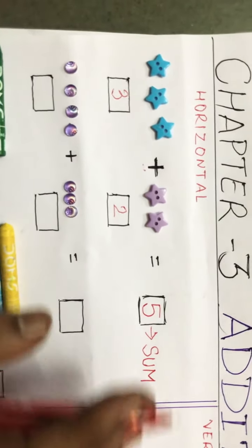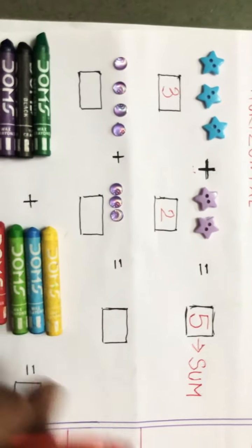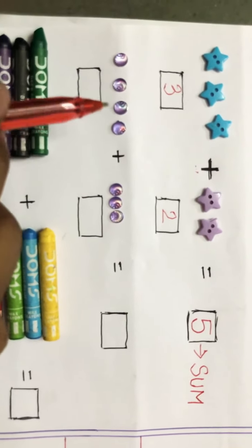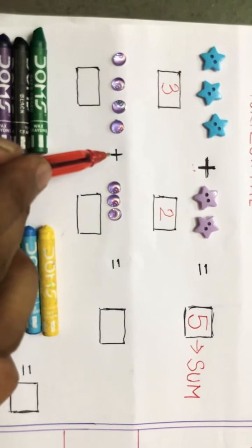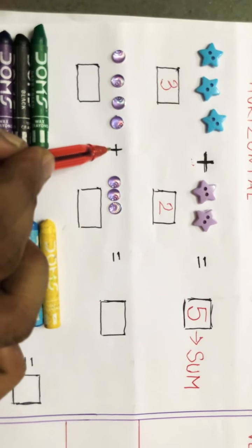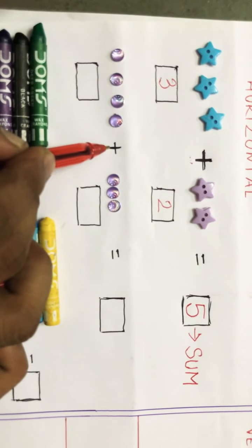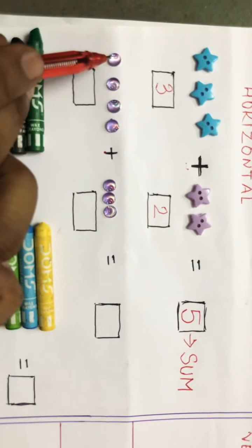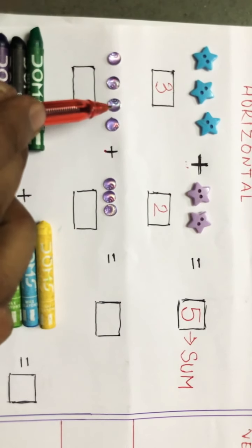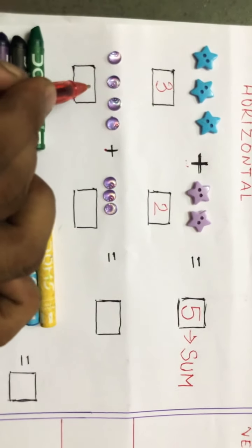Okay, now see the second one. Bindis are there. We call it as sum, and then the sign is plus, which means we'll do the addition. Count: one, two, three, four. Write here four.